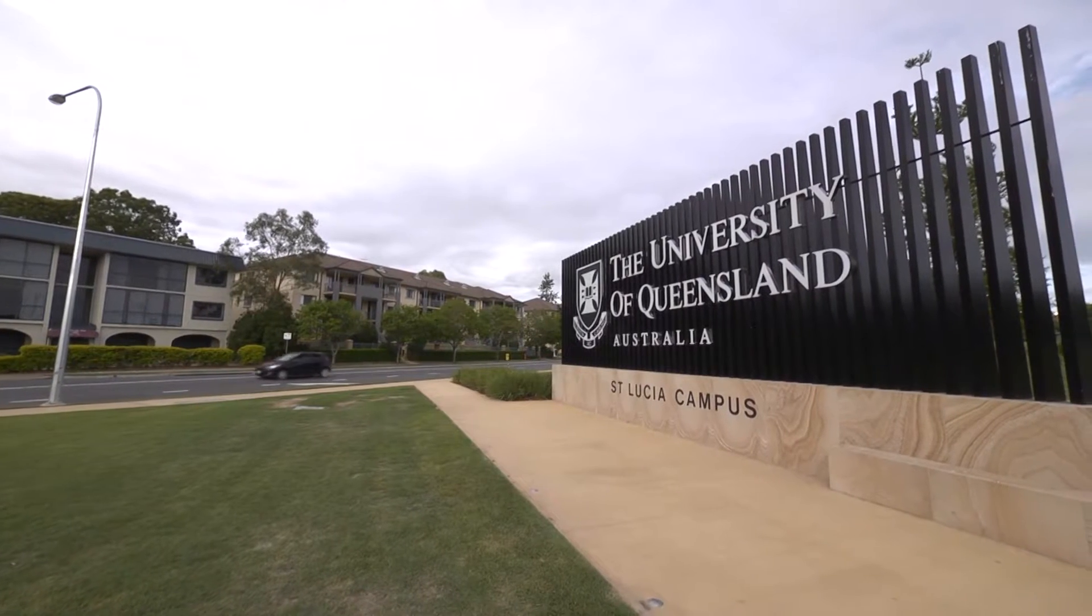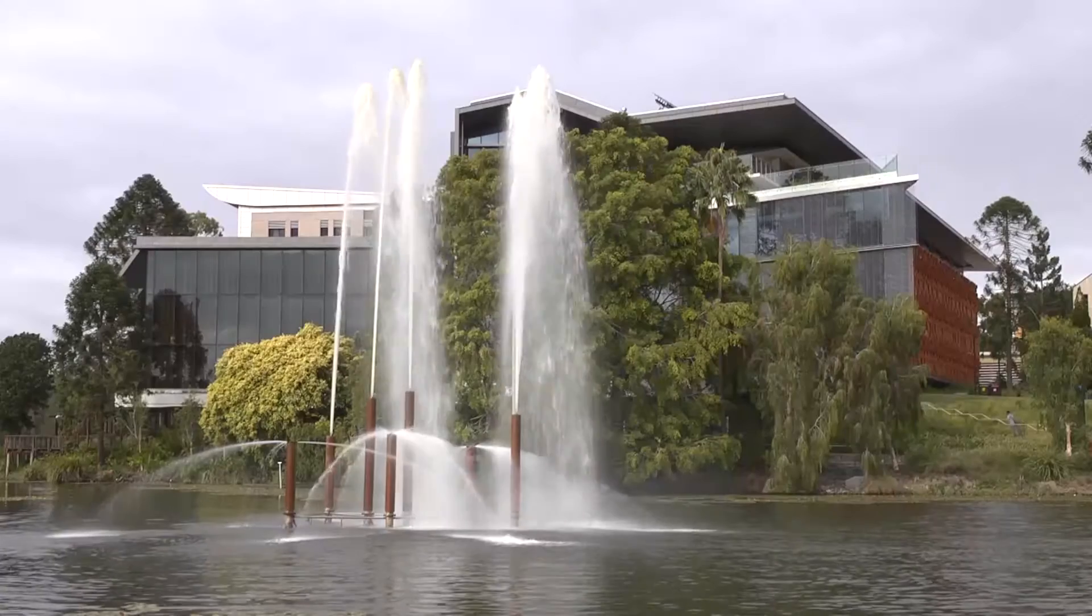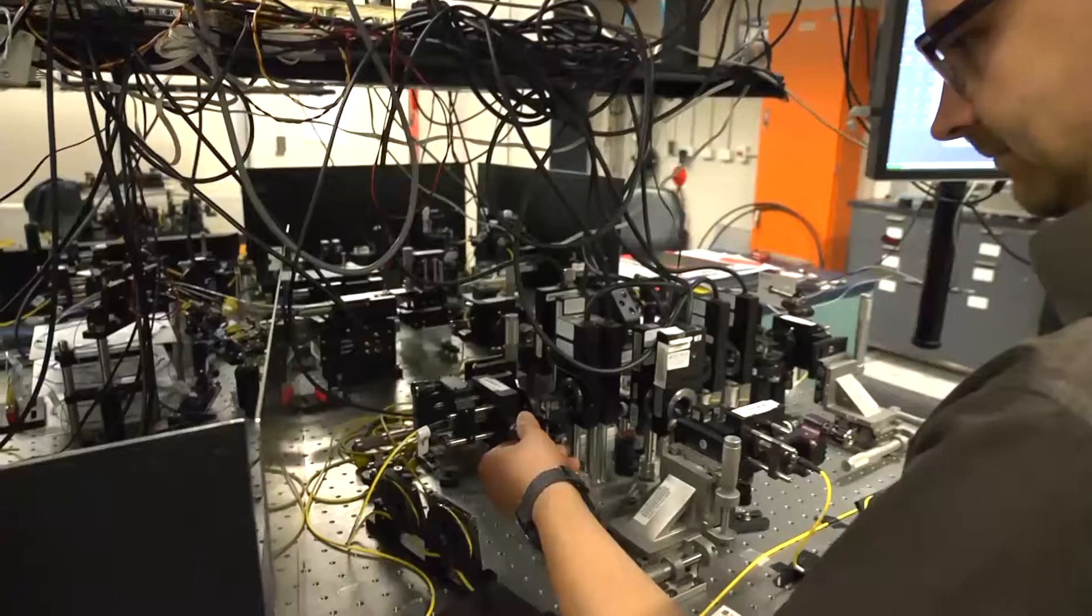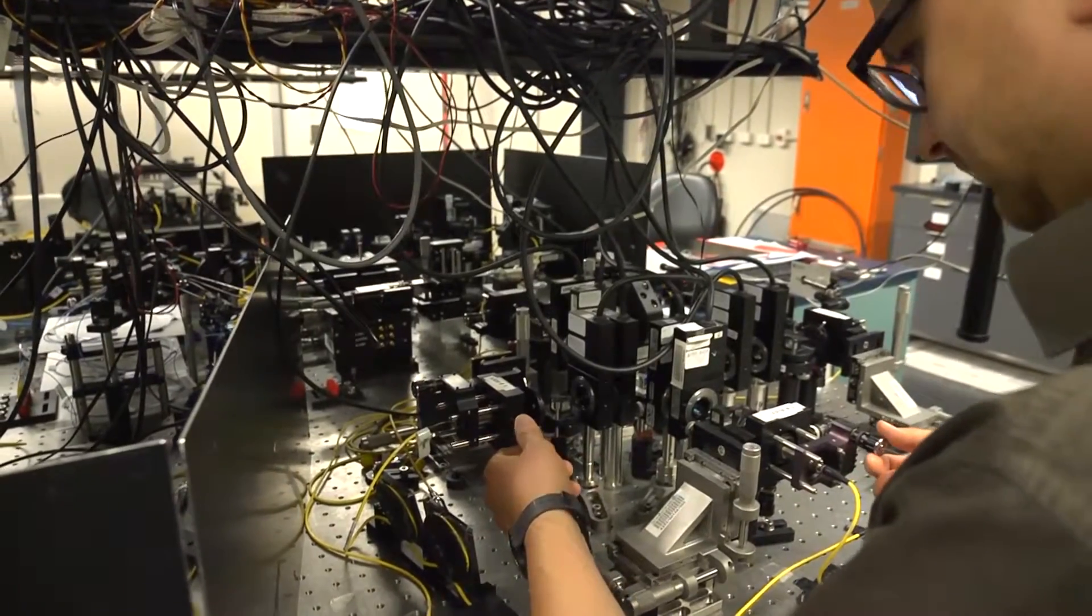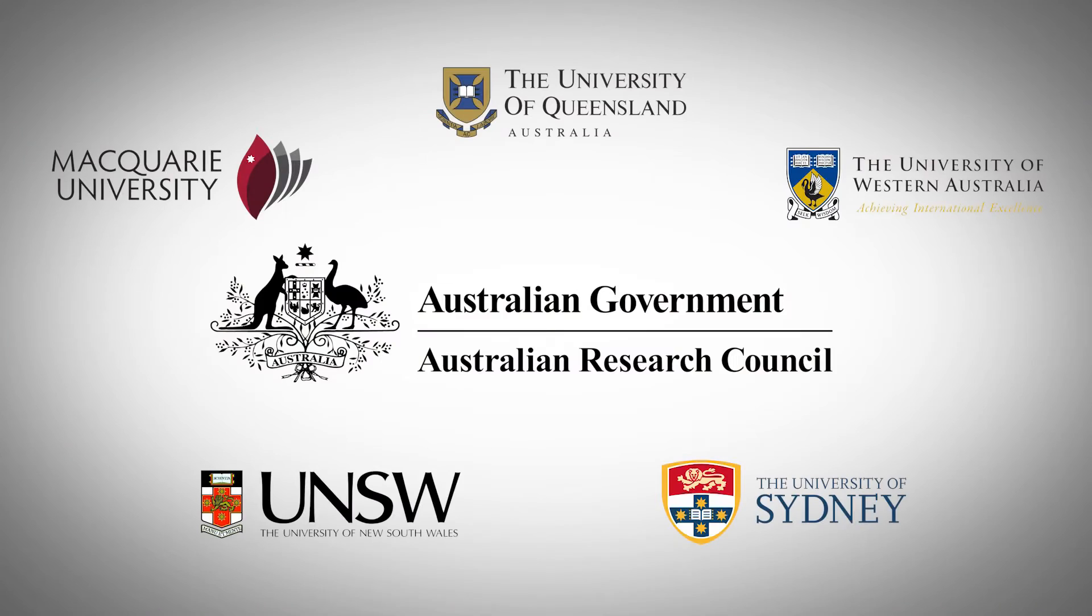The objective of the Centre for Engineered Quantum Systems is to gain sufficient control over the quantum world that we can engineer new quantum systems that don't exist in nature and apply them to new technologies. The Centre is an Australian Research Council Centre of Excellence.